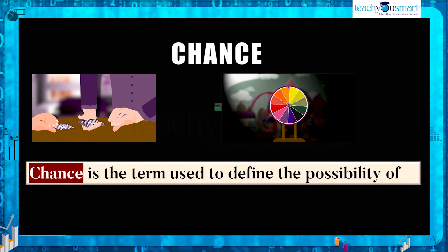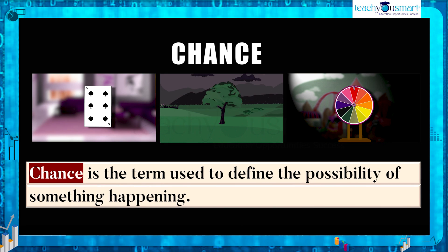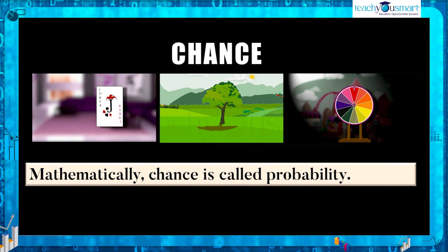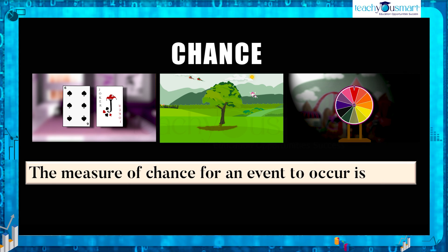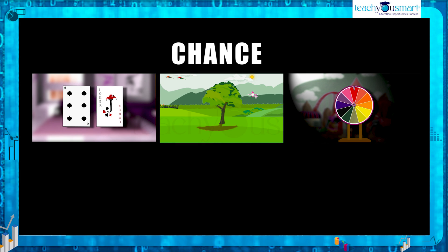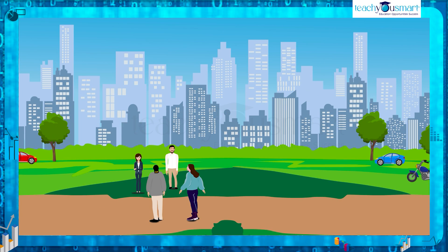Chance is the term used to define the possibility of something happening. When chance is defined in mathematics, it is called probability — that is, the measure of chance for an event to occur is known as probability. We use probabilities in real life.